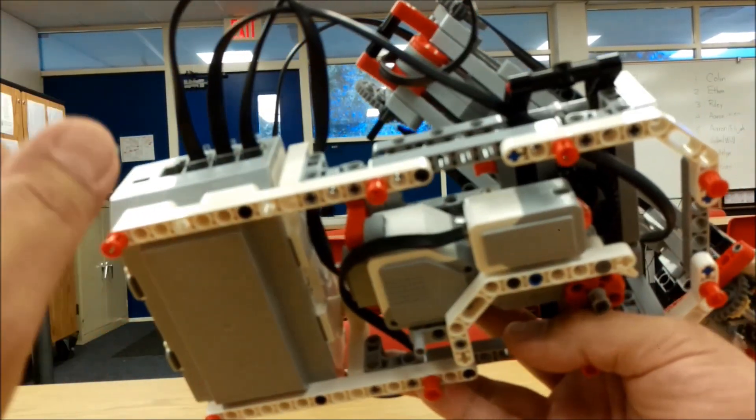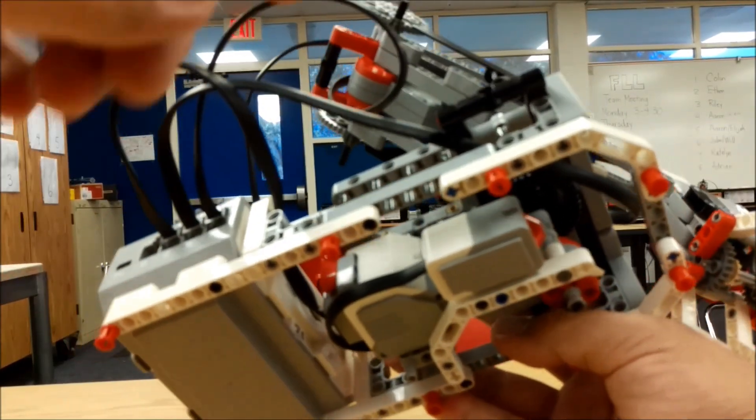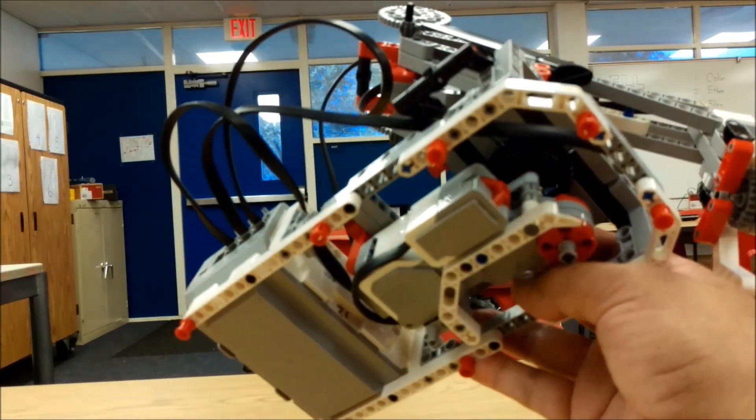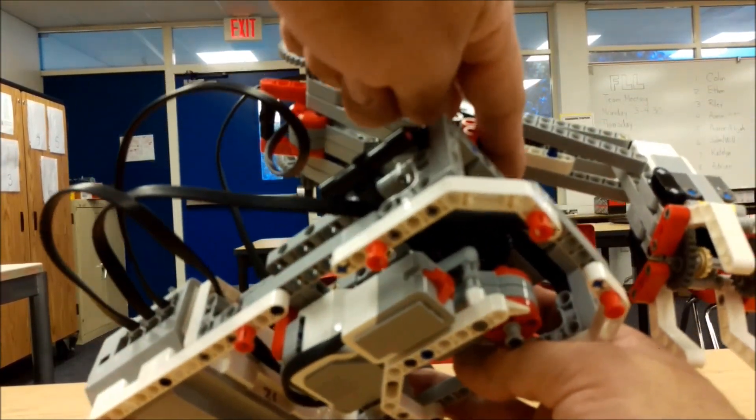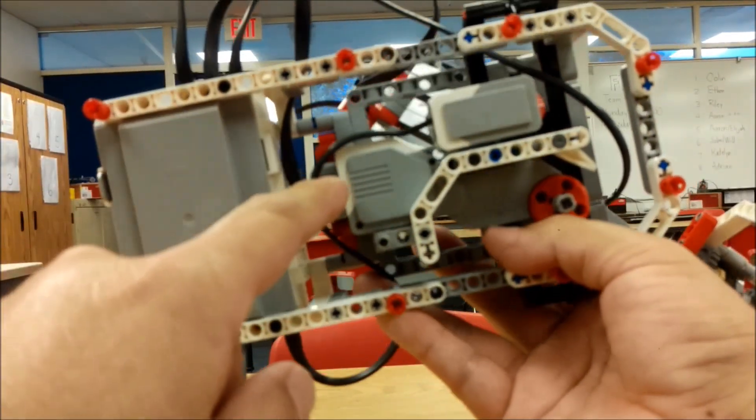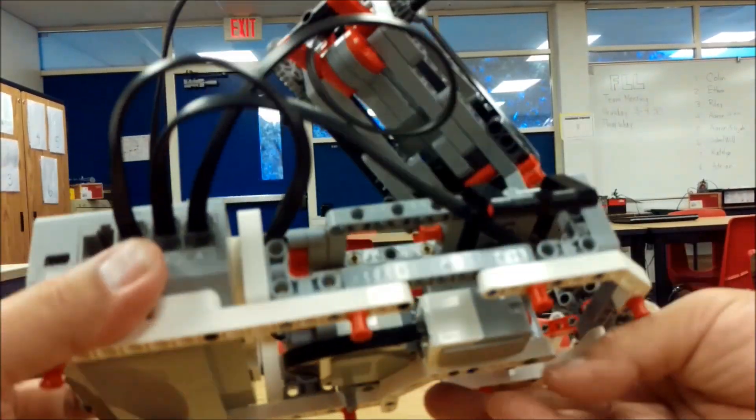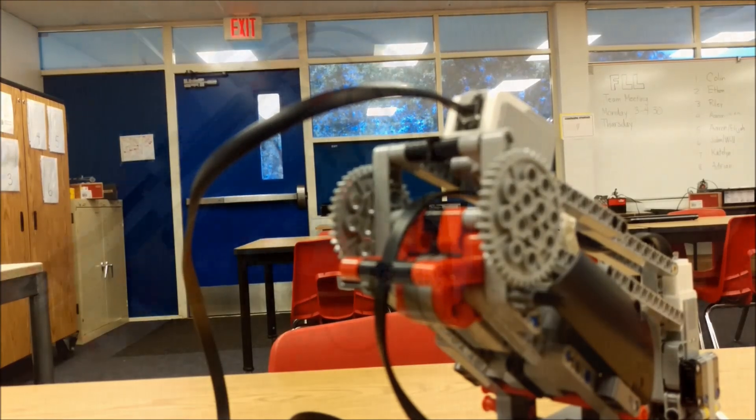So real quick again, the medium motor that's on the claw is going into port A. The large motor that's in the arm is going into port B. And then the large motor at the bottom is going into port C. Alright guys, let's go ahead and now take a look at the program.